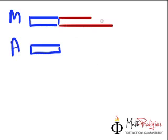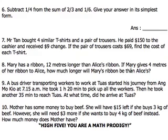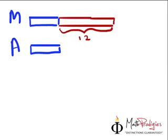She will have 12 meters more. So this is 12 meters. Now the question then says that if Mary gives 4 meters of her ribbon to Alice, that means now out of this 12, she gives 4 of it away.